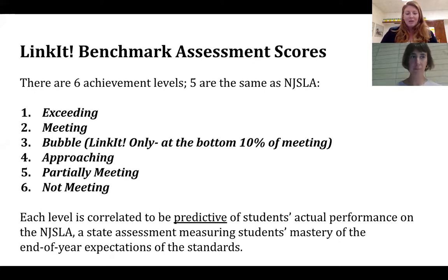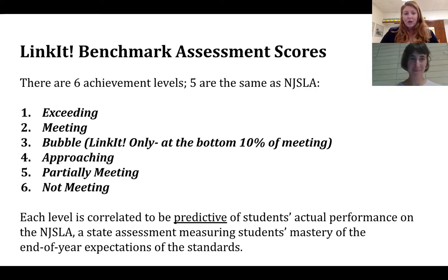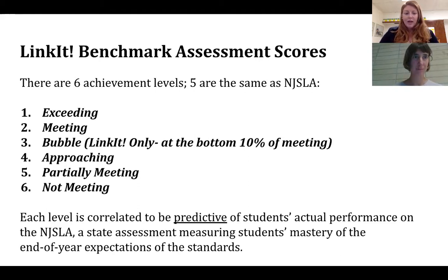Then we have approaching, partially meeting, and non-meeting. Each level of these performances — all six, or five as aligned to NJSLA — correlate as predictive of the student's actual performance on the NJSLA at the end of the year. These levels help us assess where our students are and make sure we're continually pushing them, that they're able to understand the standards, execute the required skills, and that we can see what their performance may be on the NJSLA at the very end of the school year.